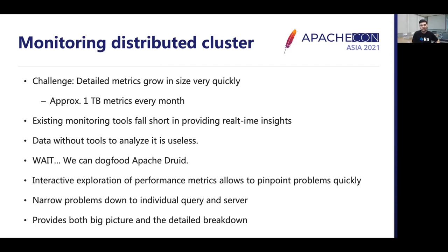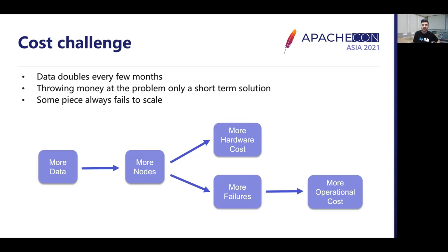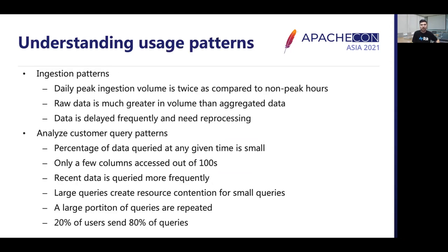The next big challenge was cost. I'm combining cost and performance improvements as they are both related — improving performance means less compute needed and in turn cost savings. The biggest cost challenge was that data was still growing and doubling every few months. We kept adding more and more nodes, which led to a proportionate increase in hardware cost. With more nodes, the probability of failures also increased and added to our operational overheads. In order to make improvements, we started diving deep into user behavior and usage patterns.